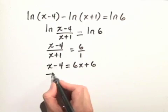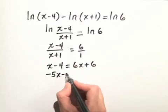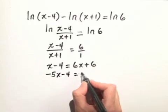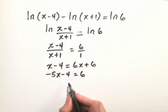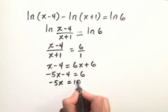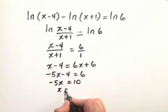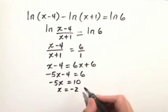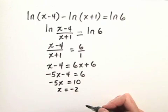Let's move the x's to the left hand side. We have -5x-4 equals 6. Adding 4 to both sides, we get -5x equals 10, or x equals -2 when we divide both sides by -5.